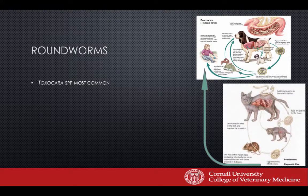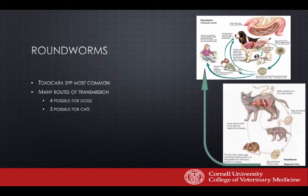Toxocara in dogs has four possible routes of transmission: eating larvated eggs from the environment; eating prey species including earthworms and cockroaches that carry larvae; transplacental transmission, which is the most common mode — that cute little puppy is essentially a bag of roundworms and hookworms from mom; and transmammary transmission, the least likely mode. For cats, transplacental transmission is dropped — vertical transmission for roundworms in cats is less likely than in dogs, though milk transmission remains a possibility.